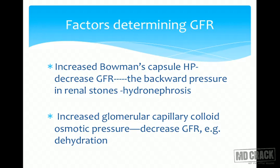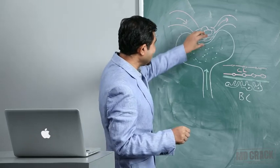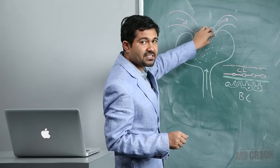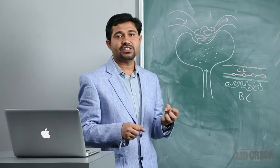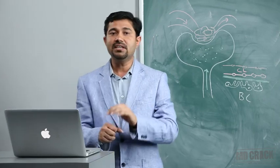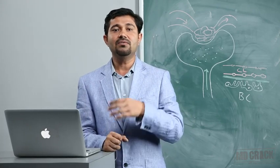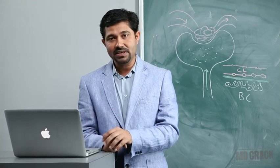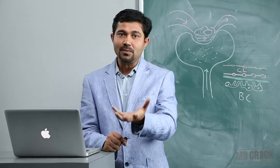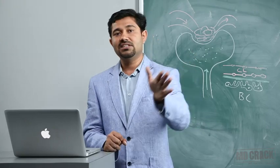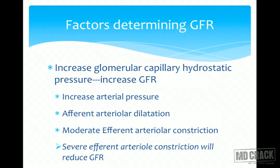Increased glomerular capillary colloid osmotic pressure also decreases GFR. If the plasma protein content in the glomerular capillaries increases, the oncotic pressure opposes filtration and GFR decreases. This can happen in dehydration, where fluid content of plasma is less, plasma protein concentration is higher, and GFR decreases.